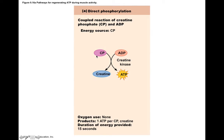To summarize: creatine phosphate stores phosphate bonds for later use. When ADP builds up in muscle cells, we can regenerate ATP by directly phosphorylating ADP back into ATP. Creatine can then be recycled and rephosphorylated during times of excess energy for later use.